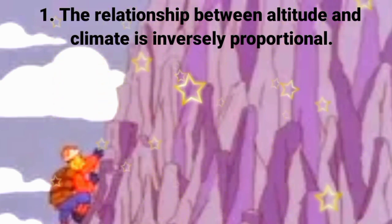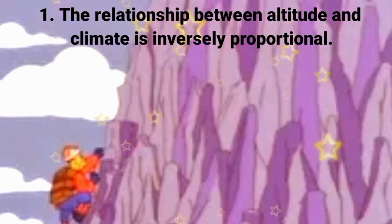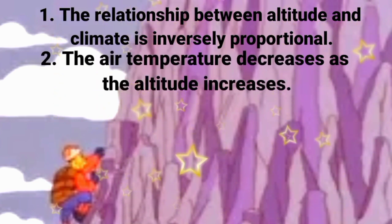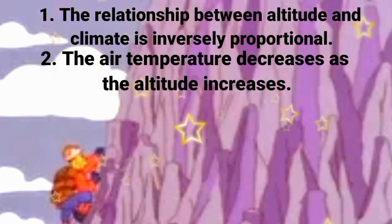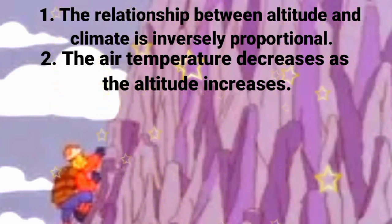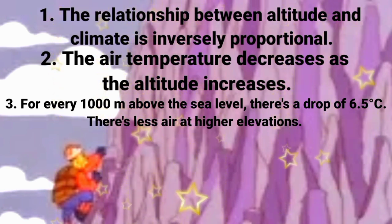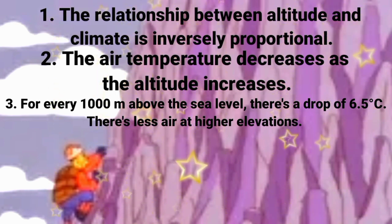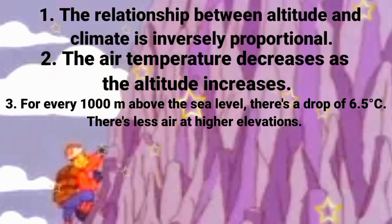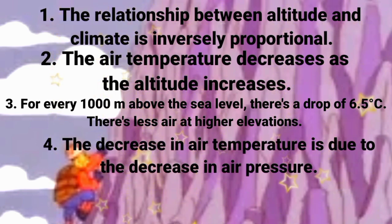Question number one: the relationship between altitude and climate is inversely proportional. Question number two: the air temperature decreases as the altitude increases. Question number three: for every 1,000 meters above the sea level, there is a drop of 6.5 degrees Celsius. There is less air at higher elevations. Question number four: the decrease in air temperature is due to the decrease in air pressure.